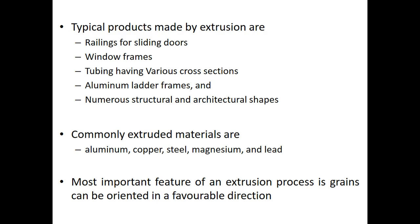What are the typical products which can be made using extrusion? For example, the railings for sliding doors, window frames, tubings having various cross sections, aluminium ladder frames, structural and architectural shapes, and so on. Let us also look at what are the different commonly extruded materials. As I mentioned, aluminium, copper, steel, magnesium and lead are the commonly extruded materials. Some other metals and alloys can also be extruded.